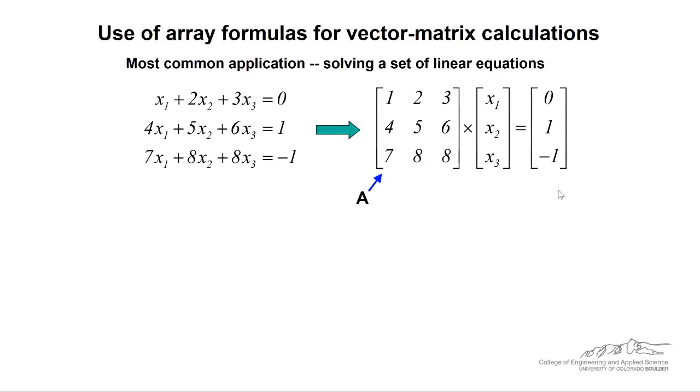So what we do is we call this coefficient matrix big A. This is our solution vector x, and then we have our resultant vector. So it's not hard to see that A·x equals b.